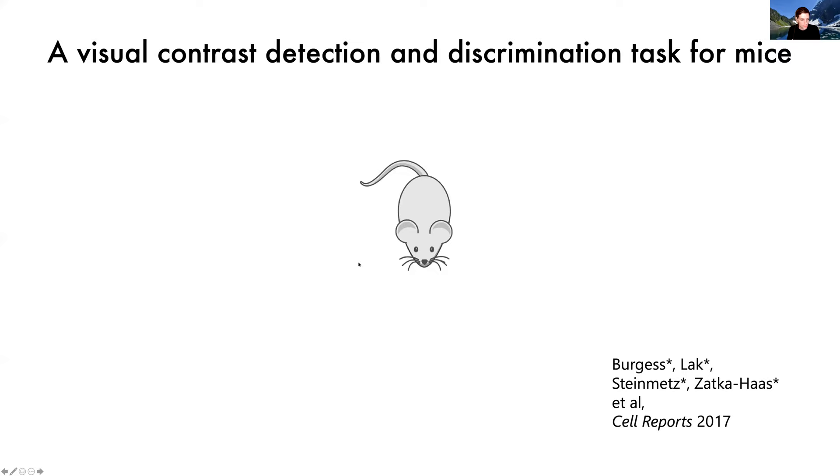So we designed a contrast detection and discrimination task for mice. This was led by Chris Burgess, who designed the basics of this task before he even joined the lab. In this task, the mouse is seated and surrounded by computer screens on which visual stimuli are shown. And the mouse has a wheel that it can turn clockwise or counterclockwise to indicate a decision about what it sees on the screens.